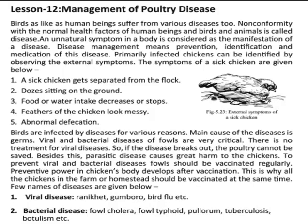First we will have to prevent the disease before it attacks and infects. And if infected by the disease, first we will have to identify it and then take medicine to cure the disease. An infected sickan can be identified by observing external symptoms. The symptoms of sickan are: a sick sickan gets separated from the flock, those are sitting on the ground, food or water intake decreases or stops, feathers of the sickan look messy and abnormal defections.